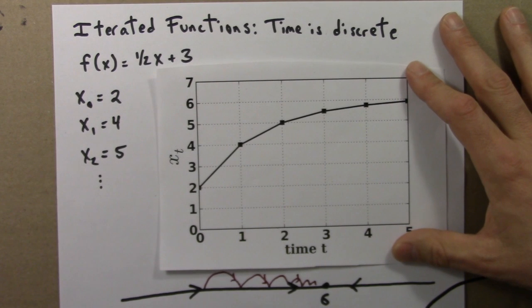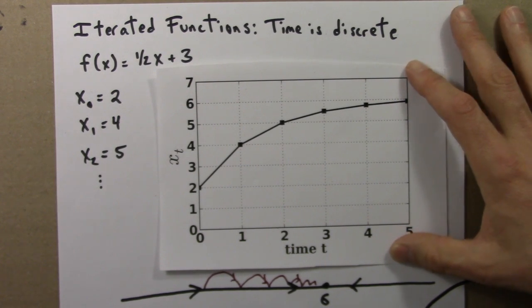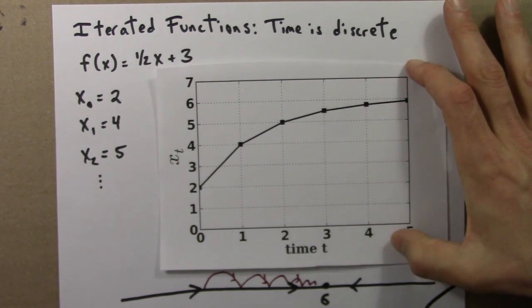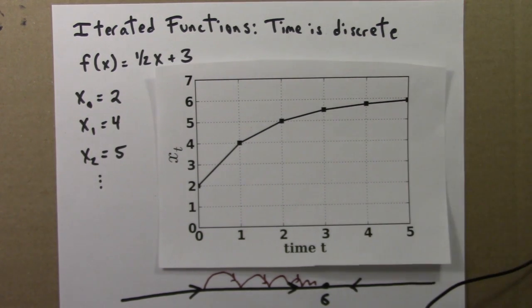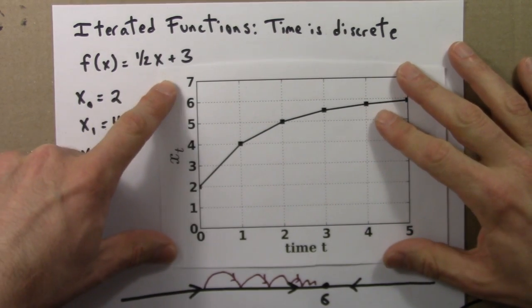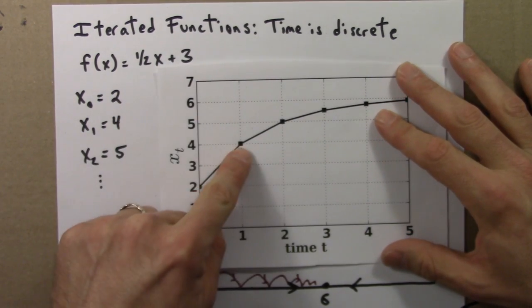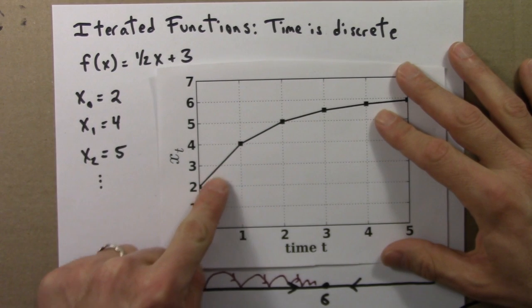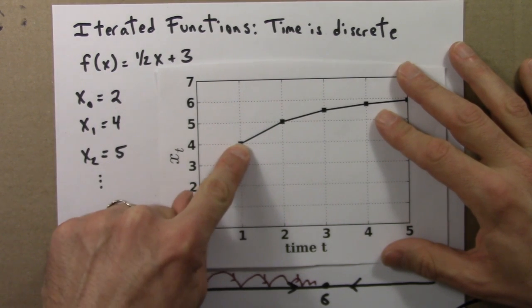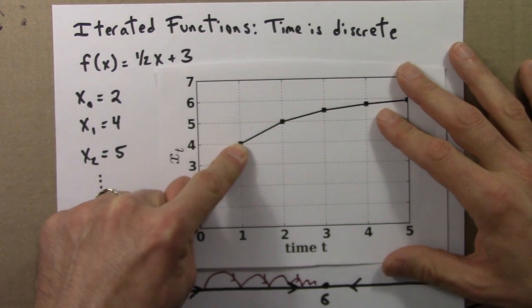Conventionally one doesn't draw it that way, but that might be a better picture. Just to underscore: in these iterated functions, the number jumps from one value to another and it doesn't have to pass through intermediate values.